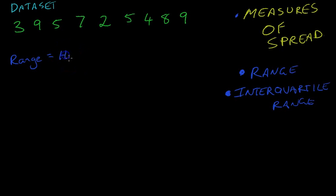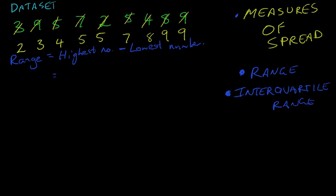So the formula for the range is highest number minus lowest number. That should be fairly straightforward here. I'll just put my numbers in order. So you can see my highest number is nine, and my lowest number is two. Nine minus two, so the range is equal to seven.